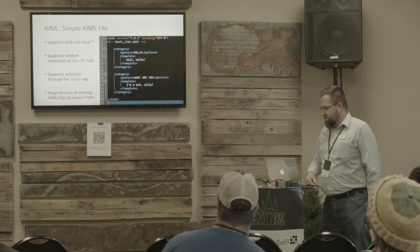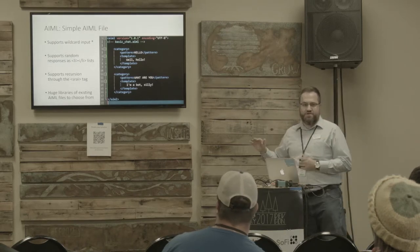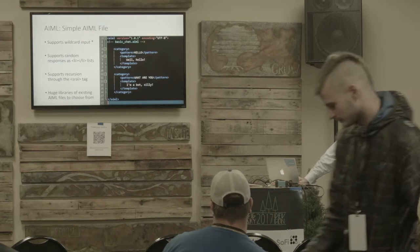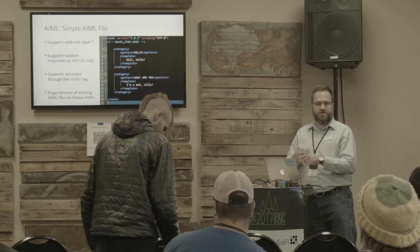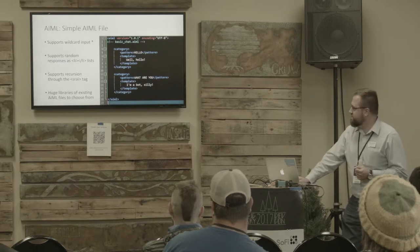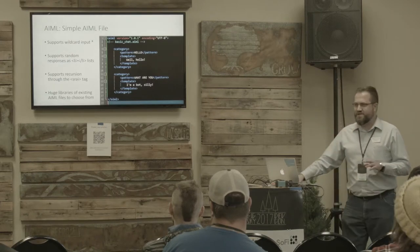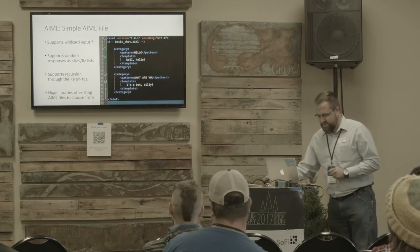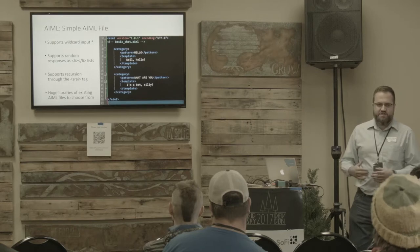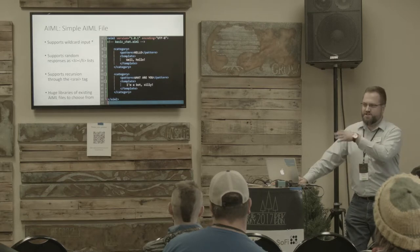So the way an AIML file looks, very simply, it looks just like an XML file. You have different categories and patterns that you're trying to match. Beyond this very basic hello-world type of example, you can have wildcard input — so you can have 'hello star' and that would respond to 'hello' followed by anything. You can have random responses with a simple unordered list using LI tags. You can use recursion through the SRAI tag, which is a really verbose way of doing it. The thing about AIML is that since it's been around forever, there are huge libraries — like every noun in the English language, or lists of common appliances — so if you need that sort of thing, chances are you can just Google and find it quickly.